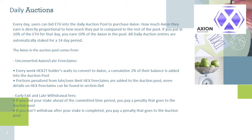The daily auction — putting tokens and value into your pocket. To get Axion, it needs to be claimed by HEX 2T holders. The longer they wait to claim, the more penalties they face — about 2% of their total per week. This 2% is added into a daily auction pool where people can bid using ETH on the Axion tokens within it. If you bid 10% of the ETH on that day, you get 10% of the pool rewards.